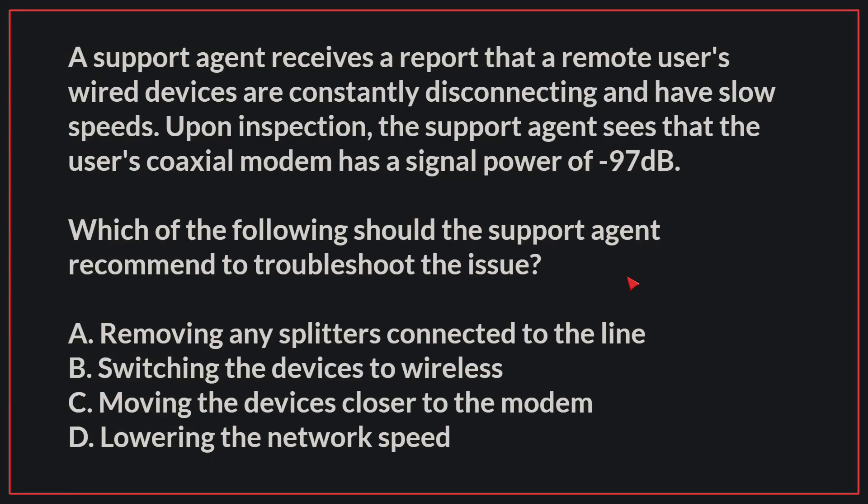A support agent receives a report that a remote user's wired devices are constantly disconnecting and have slow speeds. Upon inspection, the support agent sees that the user's coaxial modem has a signal power of negative 97 dB. Which of the following should the support agent recommend to troubleshoot the issue? The correct answer is A: Removing any splitters connected to the line.